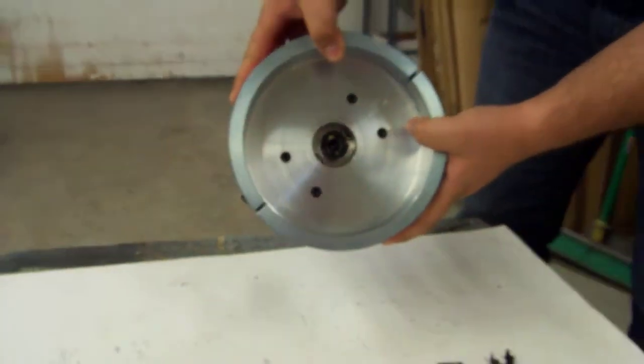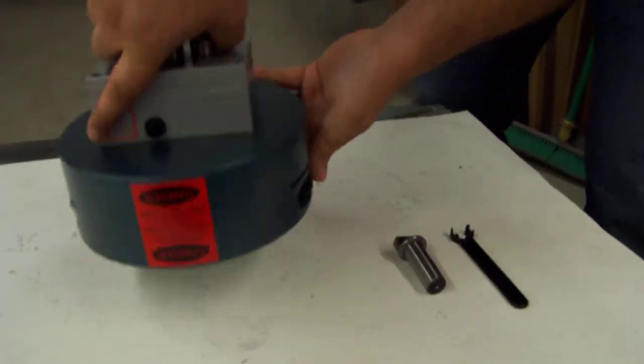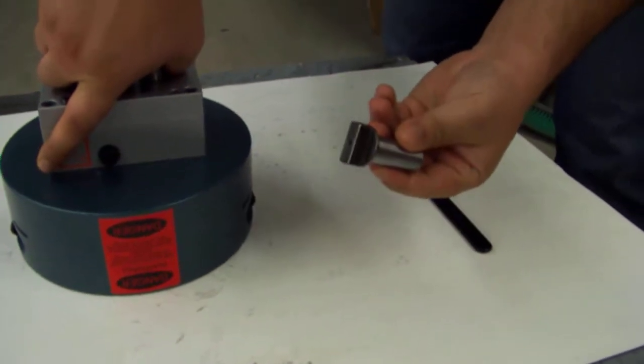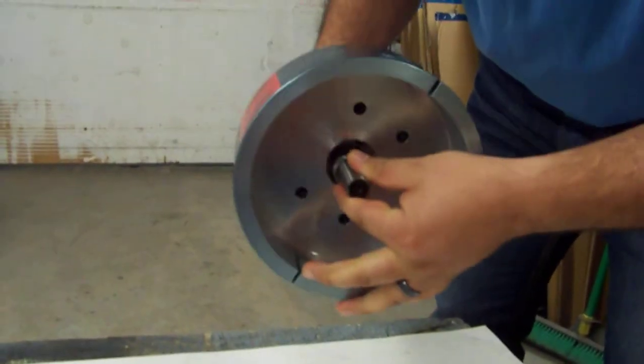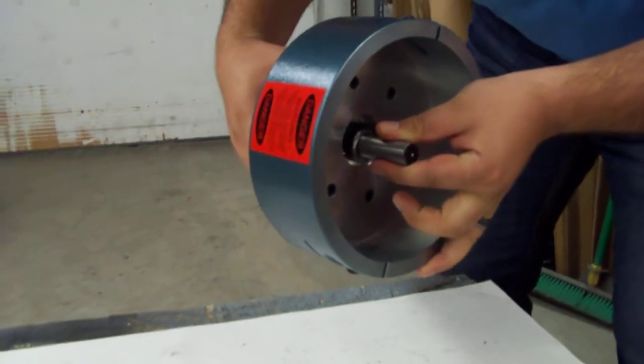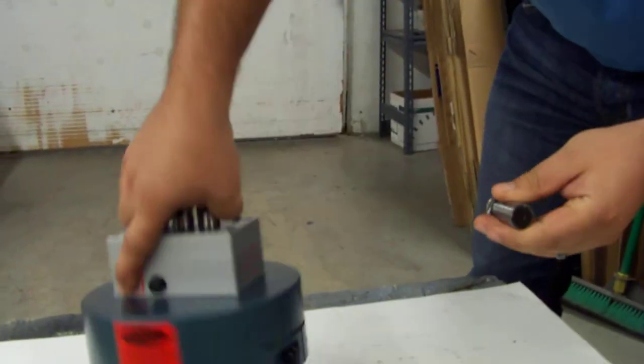And what we have here on the table is a male drive tang that will go into the customer's ER32 or ER40 style collet chuck on their CNC machine and will drive this head. This is a manually loaded head.